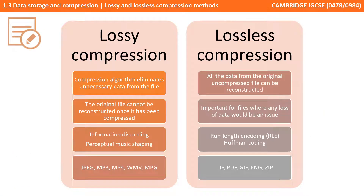As a summary, lossy compression is a compression algorithm which eliminates unnecessary data, but it means the original file cannot be reconstructed once it's been compressed. It uses various methods and depending on the file type, this could include information discarding and perceptual music shaping. Some lossy compression algorithms include JPEG, MP4, MP3, WMV, and MPG. As you can see, it's quite popular with multimedia formats.